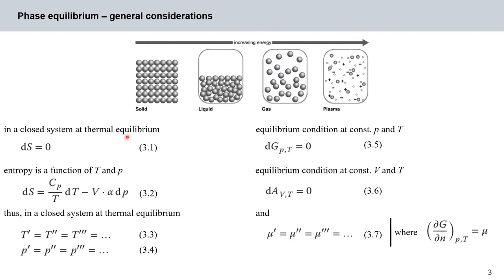But we already said we are at thermal equilibrium in a closed system. So we can categorically state in equations 3.3 and 3.4 that as we go through our system at different positions — denoted by single, double, and triple dashes — the temperature will be equal at all positions, and the pressure will also be equal at all positions.